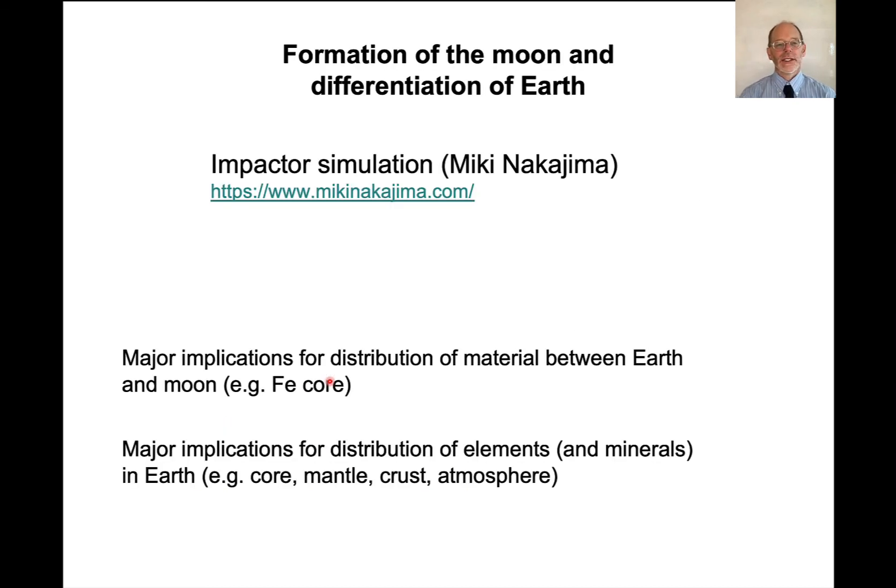We don't have a first generation star, we wouldn't be here. And low Z elements, they do fuse more readily than higher atomic number elements, because that's how you form the higher atomic number elements from hydrogen all the way up to iron. Okay, now I want to switch out here. I want to show you last the formation of the Moon and the differentiation of the Earth.